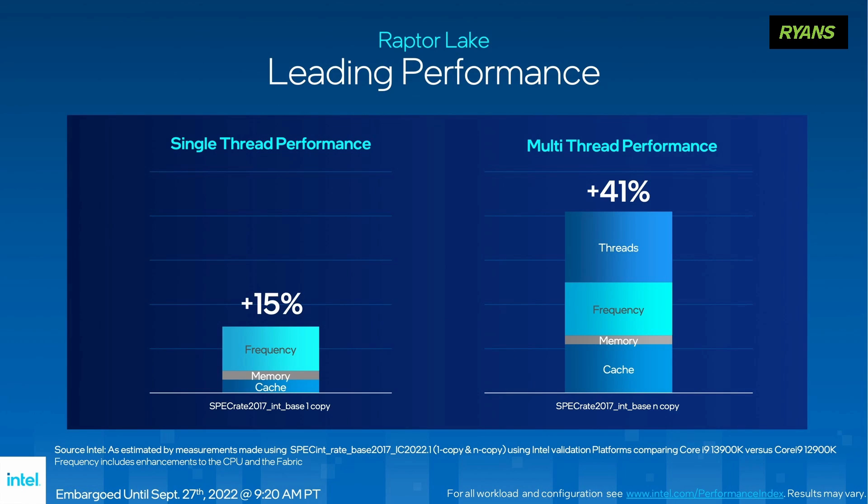At the 13th generation launch event, Intel announced that these new processors deliver 15% better single-thread performance and 41% better multi-thread performance compared to the previous generation.